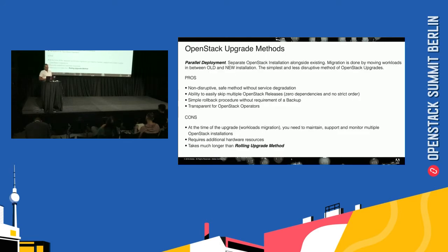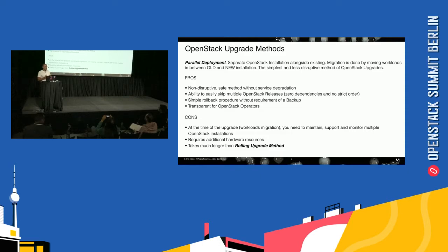Parallel deployment. This way allows you to not touch your existing OpenStack installation. Basically, imagine you have a data center with the same physical equipment, but what you're doing is deploying another OpenStack installation alongside the old one. This way of upgrading OpenStack is the simplest one because you're not scared about messing up the DB or any other configuration — your existing hardware is hosting your existing workloads and you're not touching it. This method allows you to upgrade without service interruption: you're not stopping Keystone, you're not stopping metadata. Basically, everything is available.